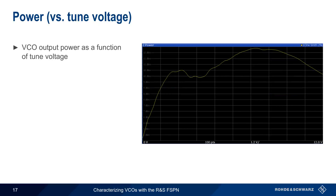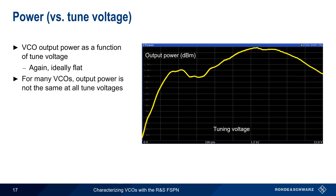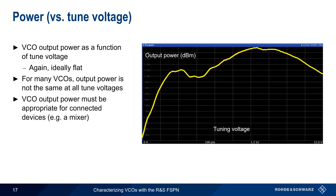The power measurement shows the VCO output power as a function of tuned voltage. In the ideal case, this graph would be flat — that is, output power would be constant regardless of tuned voltage. In most VCOs, however, output power does vary with tuned voltage. This is an important measurement, since the output of a VCO is often connected to a device such as a mixer that requires input power to be within a certain range for good performance.